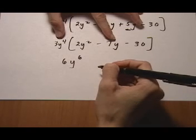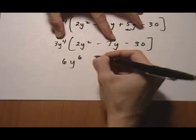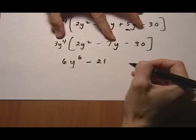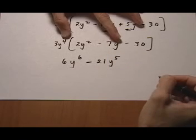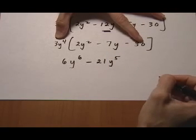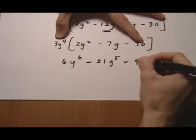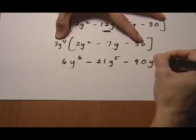Next one, 3y to the 4th times minus 7y. 3 times minus 7 is minus 21. Y to the 4th times y is y to the 5th. And then we do 3y to the 4th times minus 30. That gives us minus 90y to the 4th.